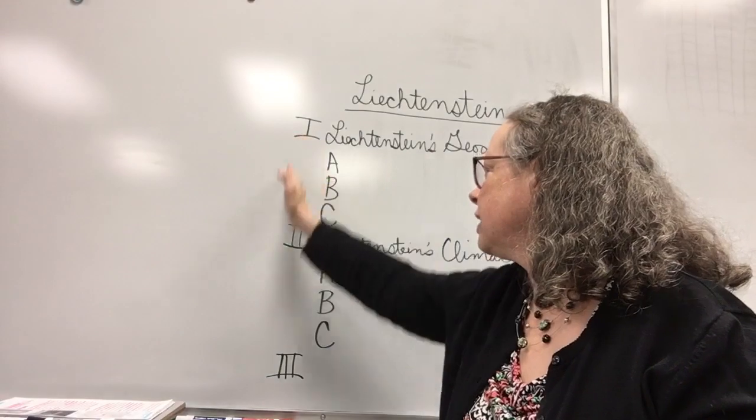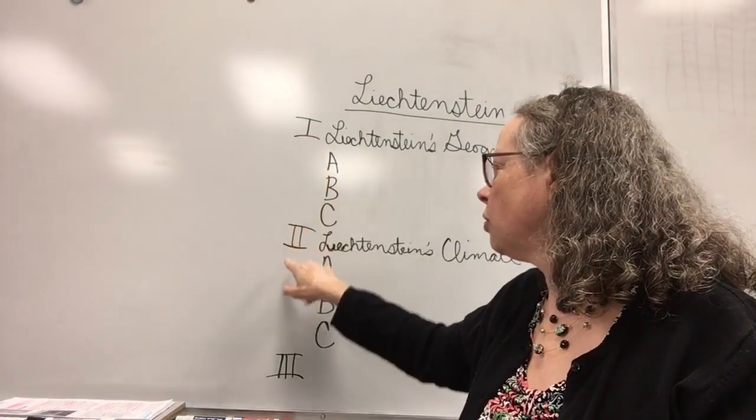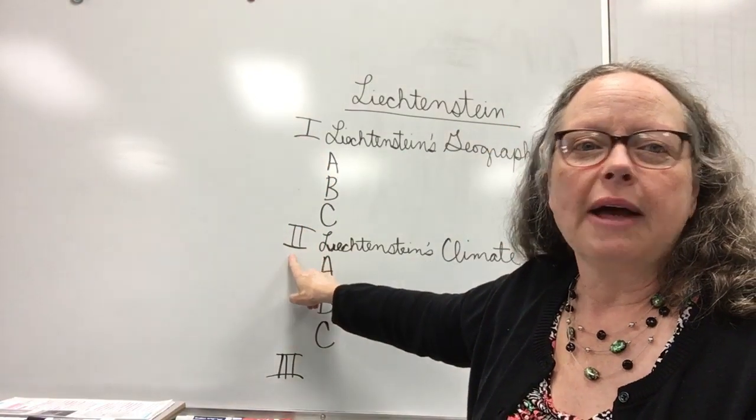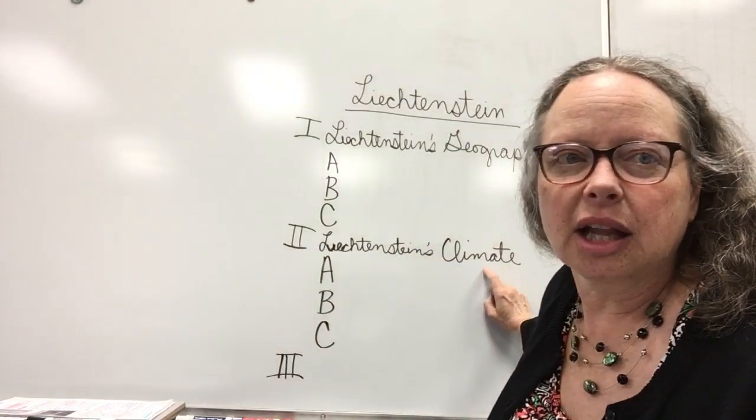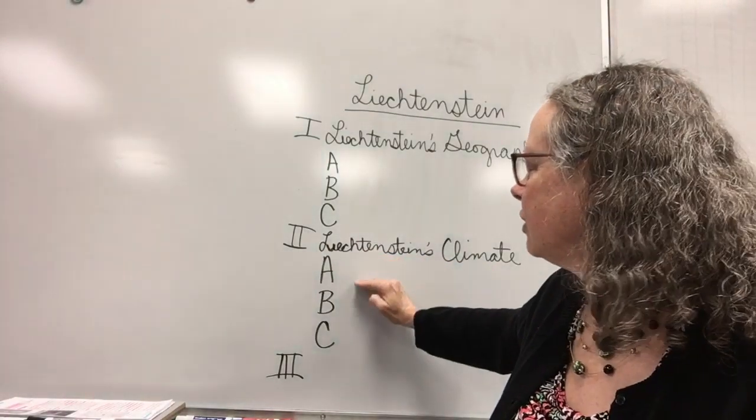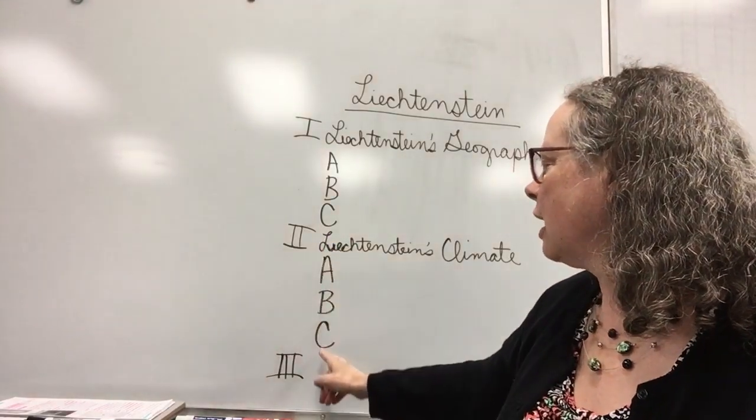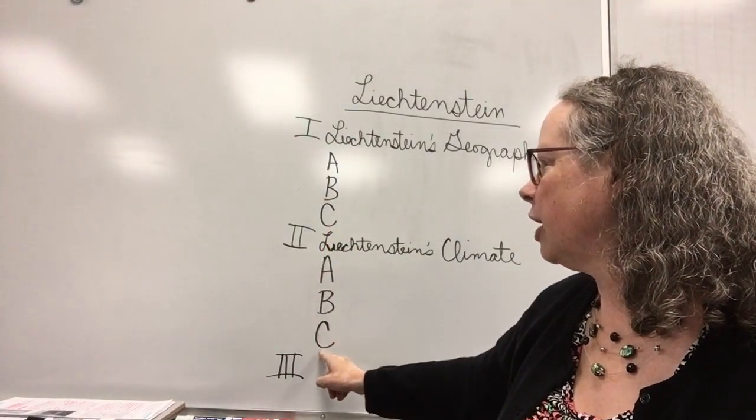Then even with that number one, you're going to write a number two and that will be the name of your country apostrophe s and climate. You're going to write down the things about the climate underneath the capital letters.